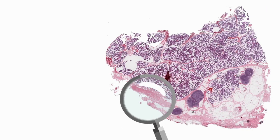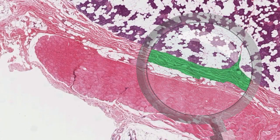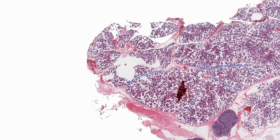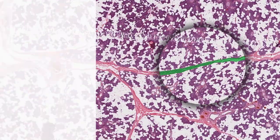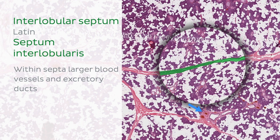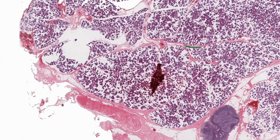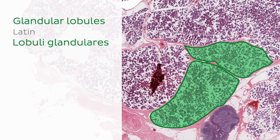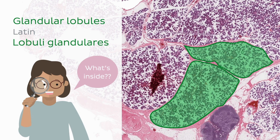The parotid gland, just like the other major salivary glands, is covered by a thick dense connective tissue capsule. The capsule sends extensions into the parenchyma of the parotid gland, forming interlobular septa. Within the septa you'll find the larger blood vessels and excretory ducts, which we'll be talking about in a while. These septa divide the parotid gland into what is known as glandular lobules.